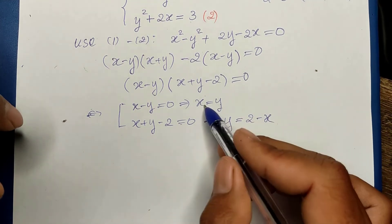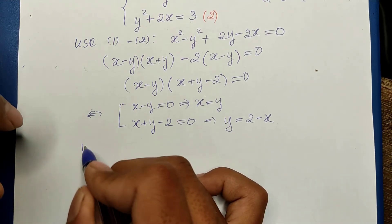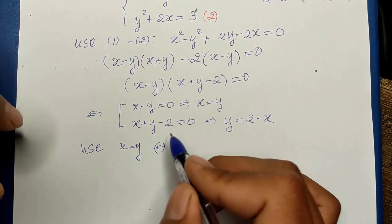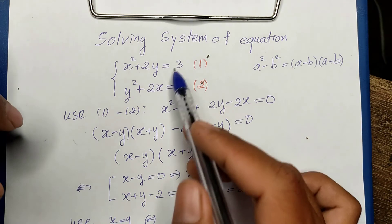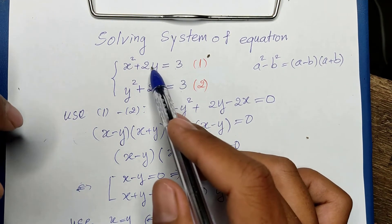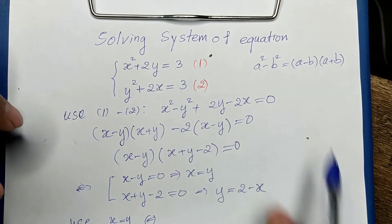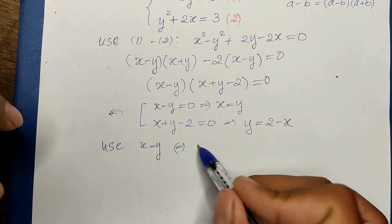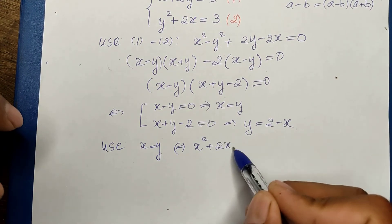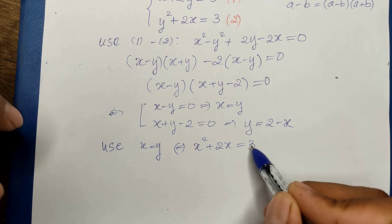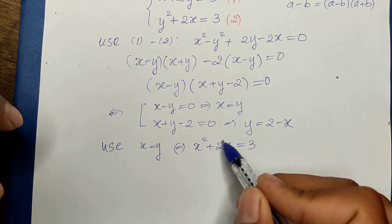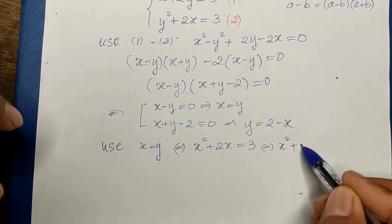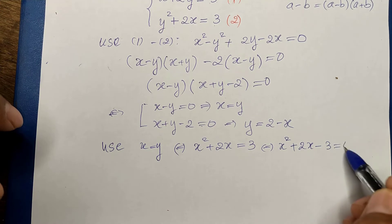Now we use the first case: x equals y. We replace y with x in the first equation. So we get x squared plus 2x equals 3. Moving 3 to the left side gives x squared plus 2x minus 3 equals zero.